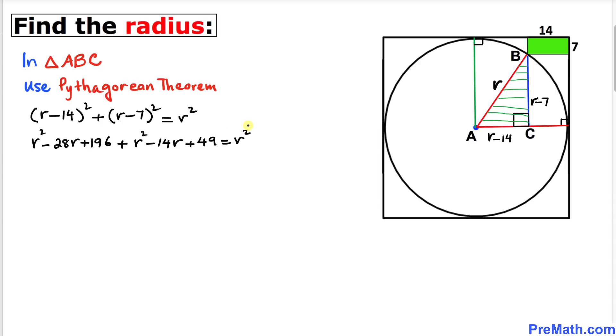Let's simplify this equation. This r squared, this r squared, and this r squared cancel each other out. Let's combine the like terms. Negative 28r and negative 14r gives us negative 42r, and then plus 196 plus 49 gives us 245 equals 0.